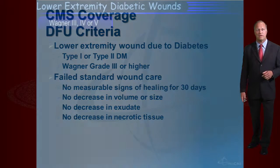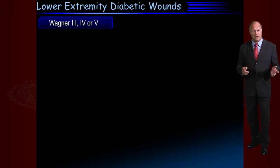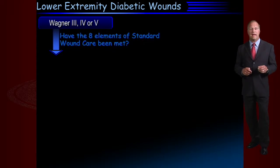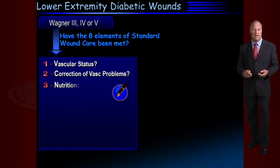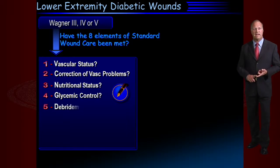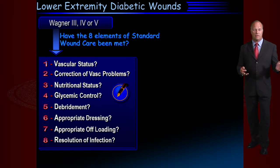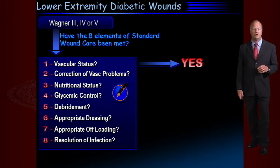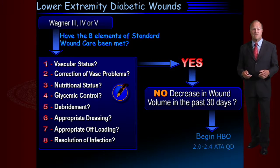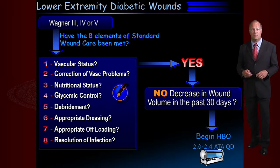A suggested management protocol for hyperbaric therapy in diabetic foot ulcer patients requires Wagner grade 3 or higher with standard elements of wound care met: vascular status evaluation and intervention when appropriate, attention to nutritional and glycemic control, debridement, appropriate dressings, appropriate offloading, and resolution of infection if present. If these standard elements have been met, we need to assess whether the wound has decreased in size in 30 days. If the patient hasn't improved despite aggressive standard wound care, hyperbaric therapy may be indicated.